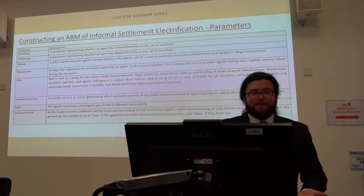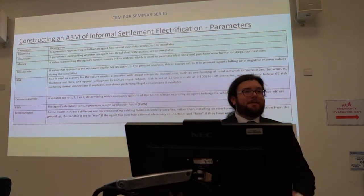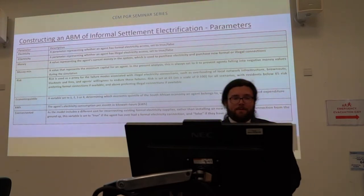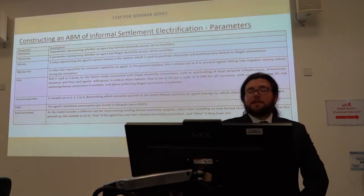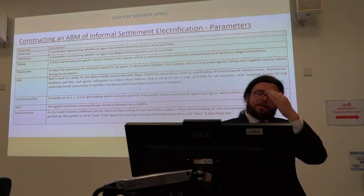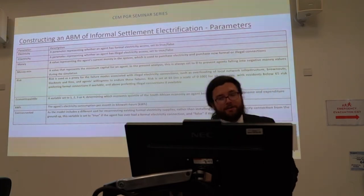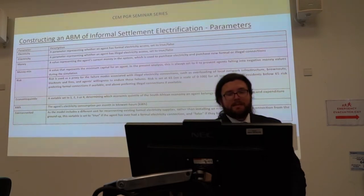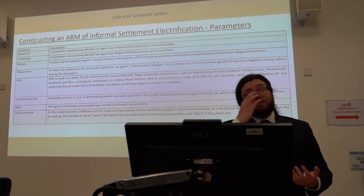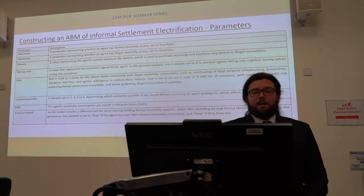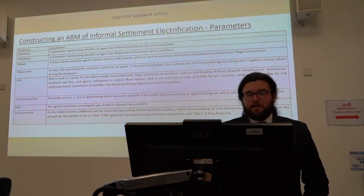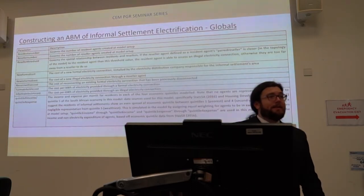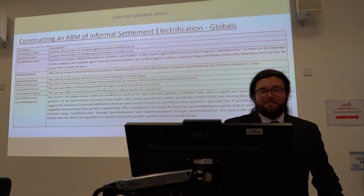I won't spend too long on these next two slides as they're quite dense. There are some boolean parameters — electricity and informal electricity, which are true-false. The one I wanted to highlight is 'risk.' Risk is used as a proxy for the failure modes associated with illegal electricity connections, such as brownouts and fires. It's also a proxy for agents' willingness to endure these failures — if risk is too low, agents will not pursue an illegal connection; if risk is high, they will. I'll be circulating these slides later if anyone wants to look at these variables in more detail.